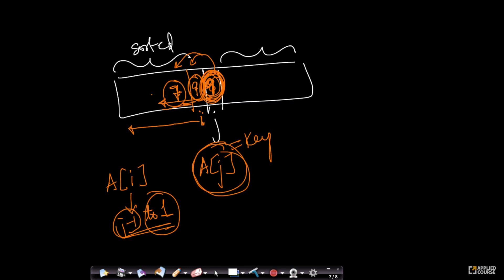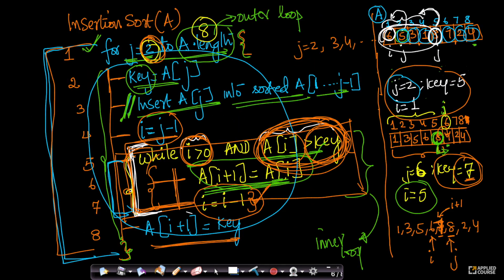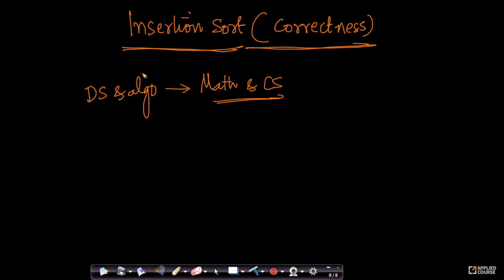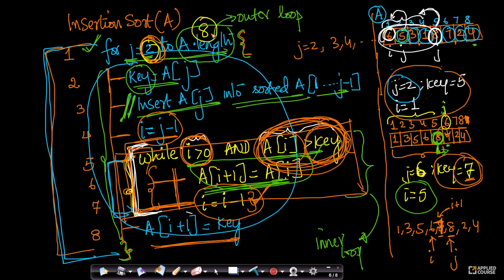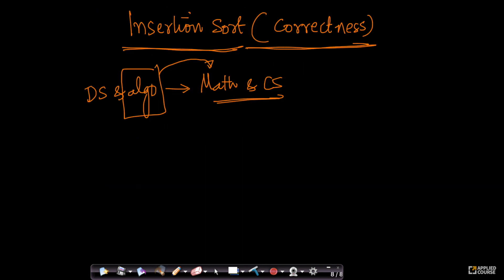We have seen the pseudo code for insertion sort and gotten an intuitive understanding. But there is something in mathematics and computer science that is super important. Data structures and algorithms are at the intersection of mathematics and computer science, and many algorithms were designed by mathematicians who always want proof — some argument for why the algorithm or pseudo code we have written is correct.